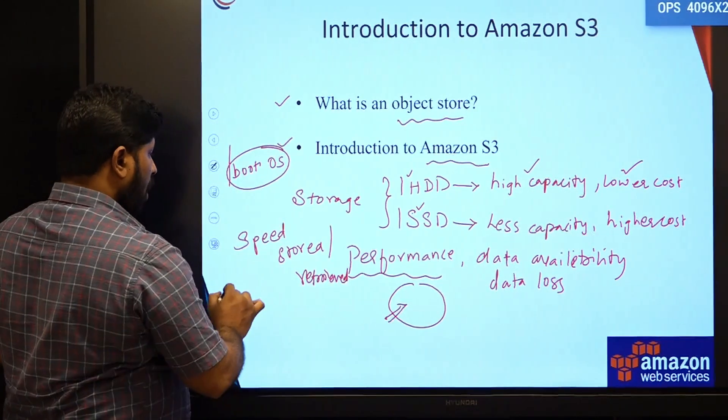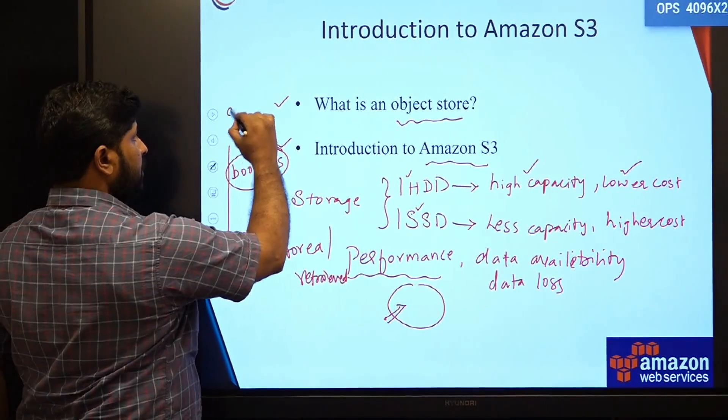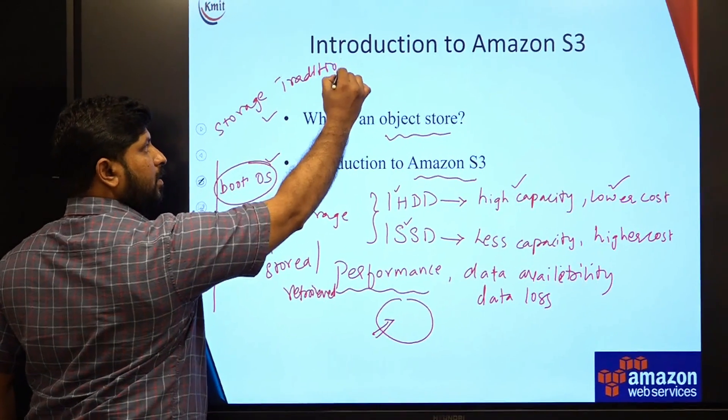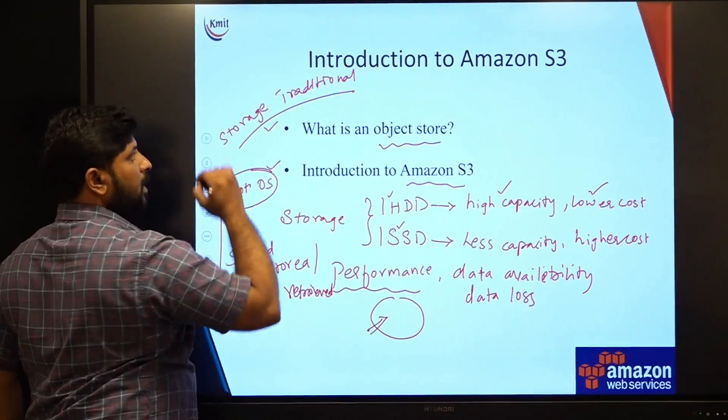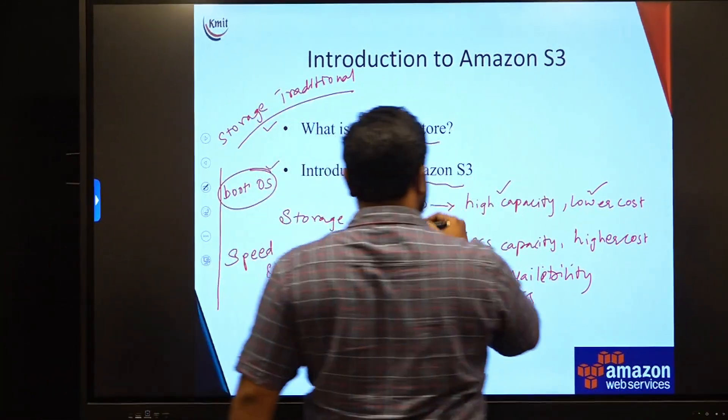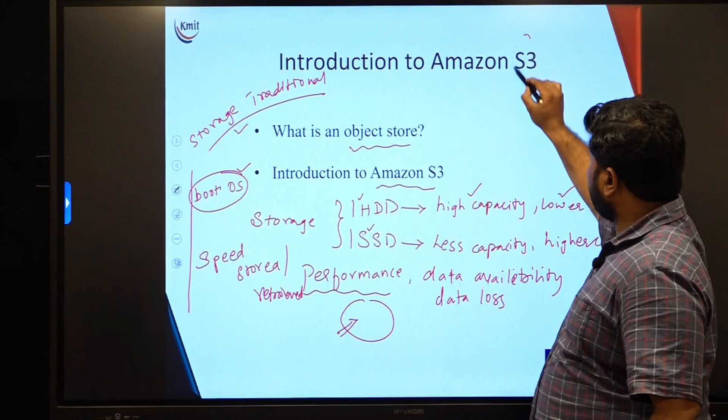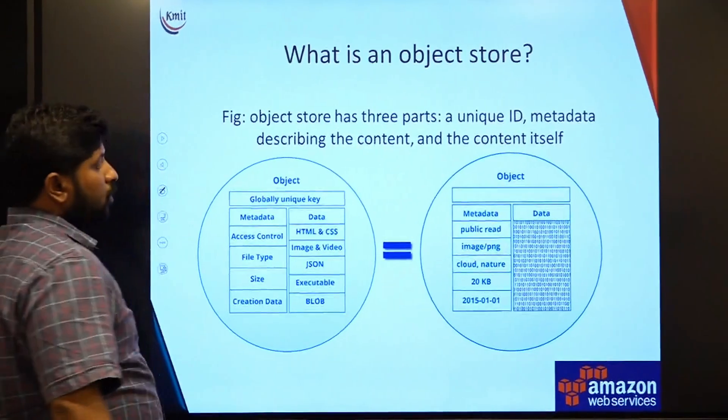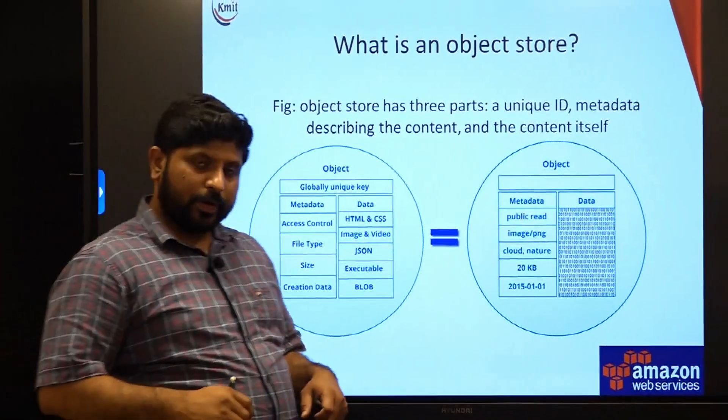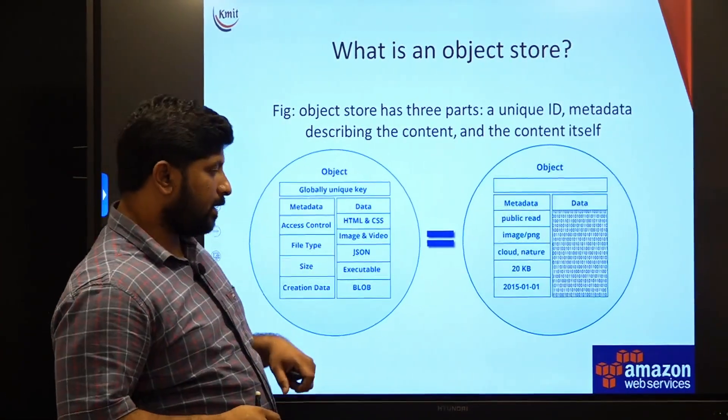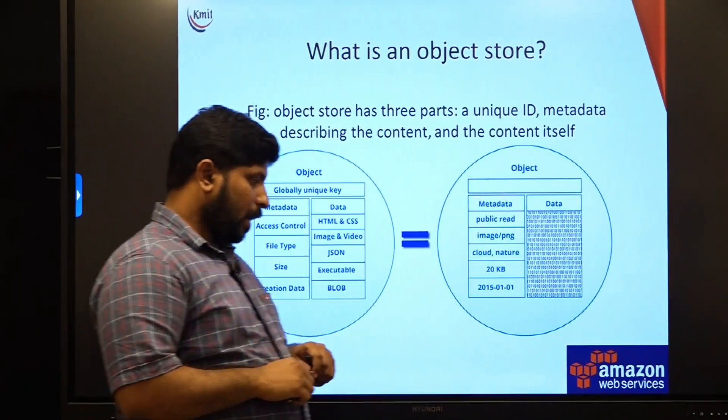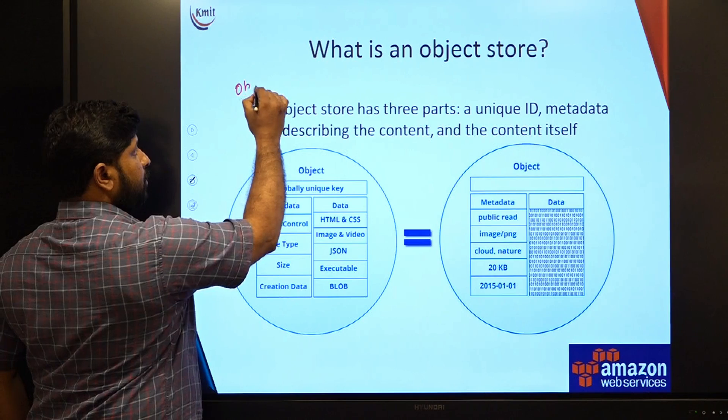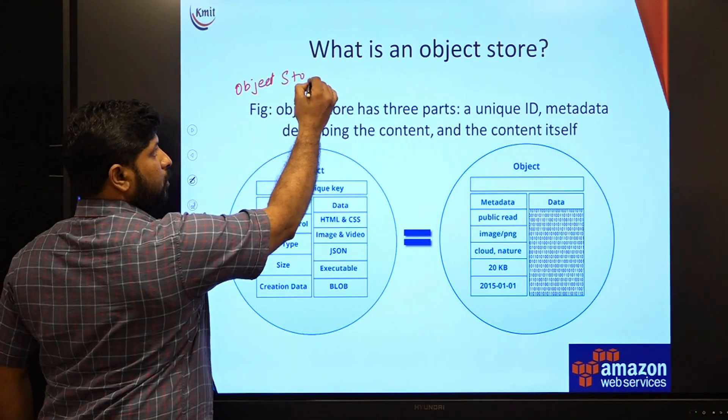This is all about how we are managing our storage in traditional systems, and when we are moving towards cloud, then how we can manage our data. One of the mechanisms is S3. Before moving towards S3, let us have a look at what is an object store. Basically, object store is also known as object storage.